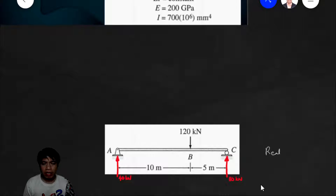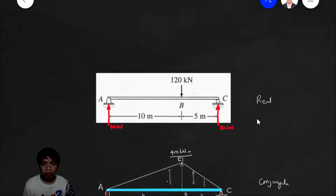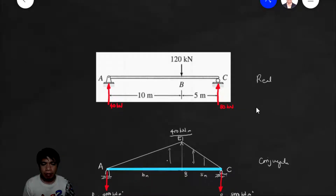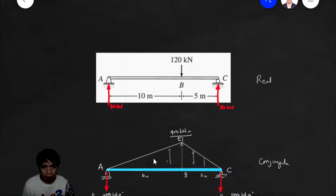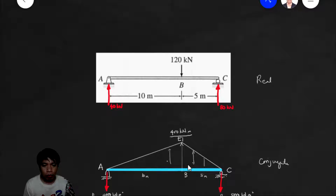This is what we call the real beam. What we will do is create the conjugate beam. Since this is a hinge and simple support, it will remain a hinge in our conjugate beam. This is a roller and simple support, so it will also remain a hinge in our conjugate beam. We will draw the M over EI diagram and that will be the load on the conjugate beam. This is the simple support that is a hinge and this is the simple support that is a roller.